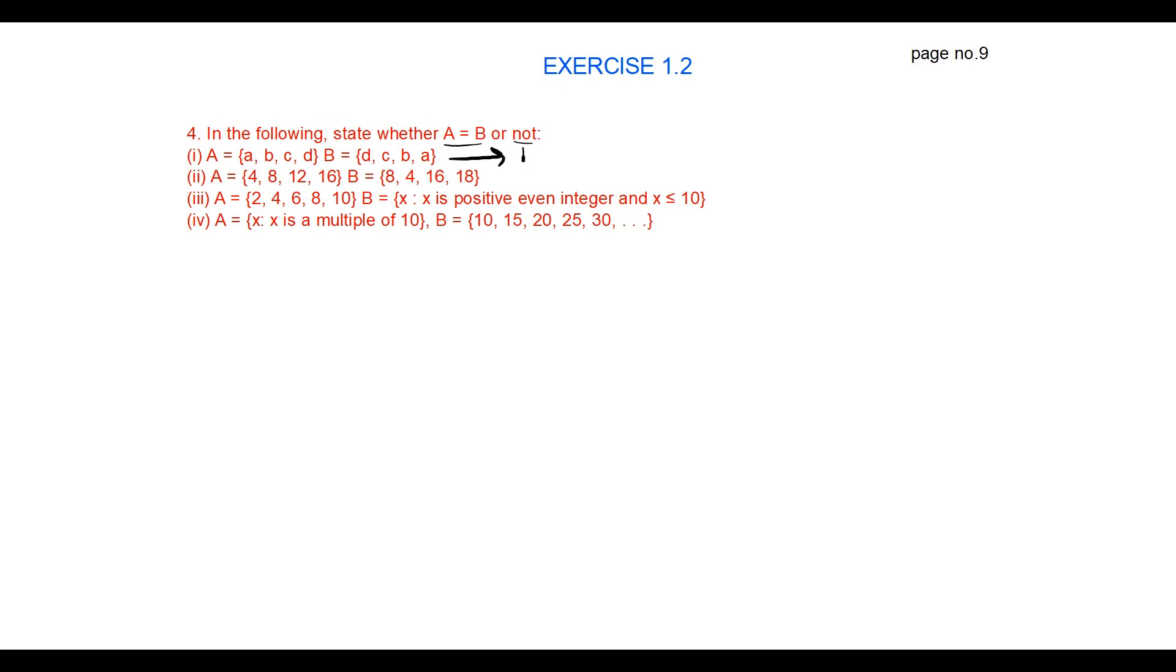A equal to A comma B comma C comma D, where B equal to A is present in B, B is present in B, C is present in B, and D is present. Only the order is changed, so A equal to B.